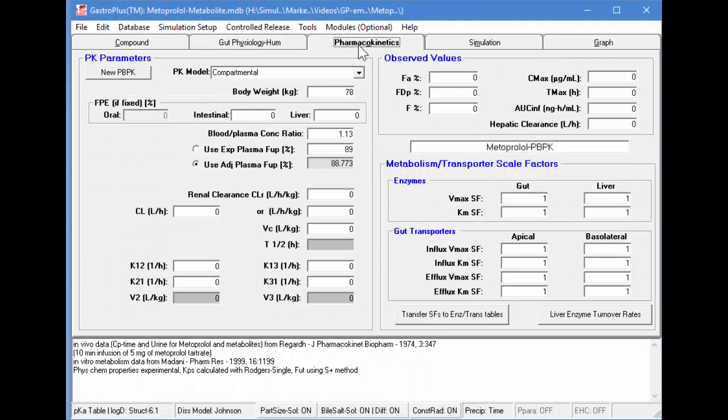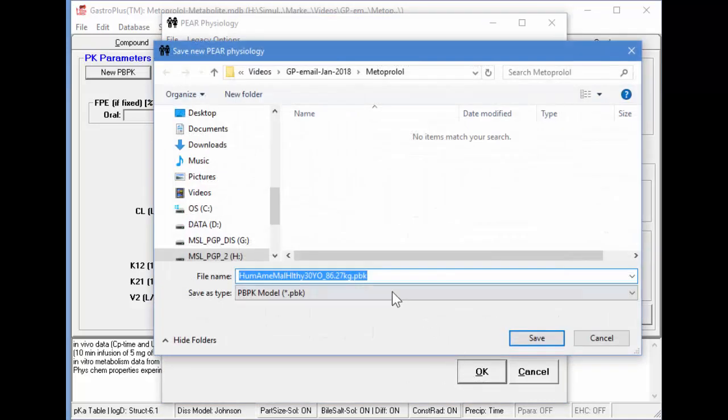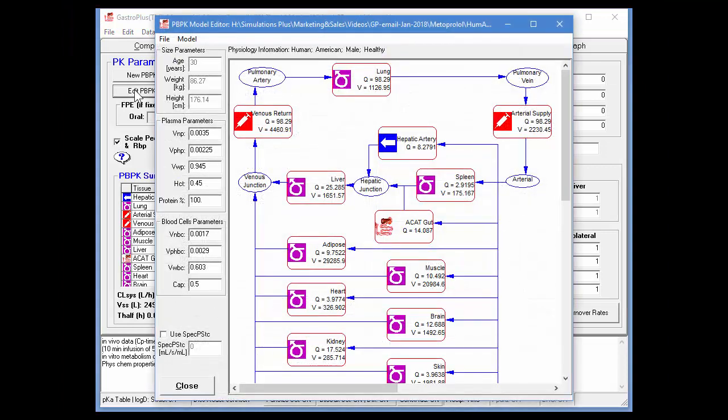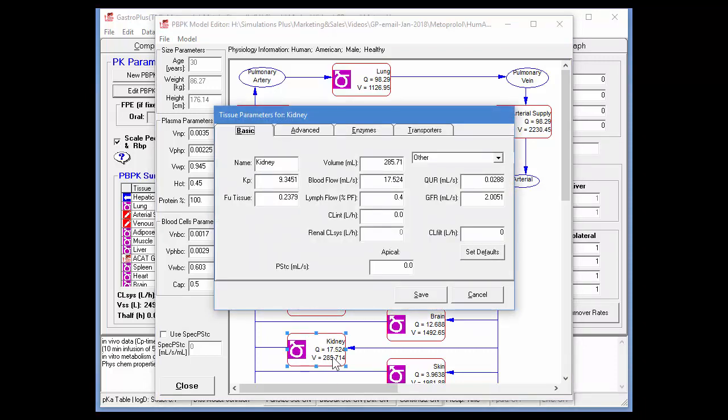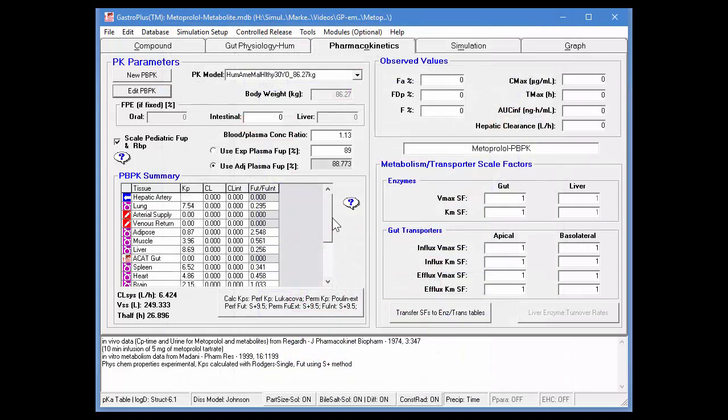The first thing I'm going to do is go to the Pharmacokinetics tab and define a new PBPK model. It will be for a healthy American male that's 30 years old with a weight of 86.27 kilograms. I'll save this in the same folder as the database. Now I'll click on the Edit PBPK button to define the clearance in the kidney for this first record. I'll double-click on the kidney record and specify FUP times GFR as the kidney clearance for the parent compound Metoprolol.